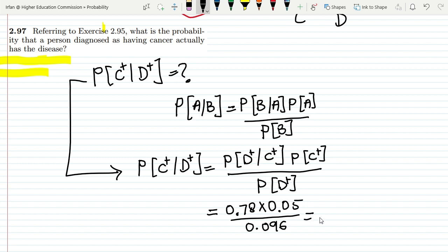Now let me calculate it. How much is this? This is 39 divided by 96 which ultimately gives me the answer that is 0.406.